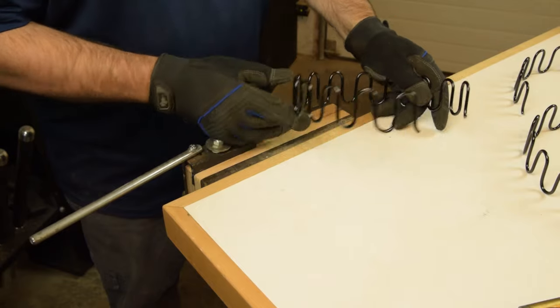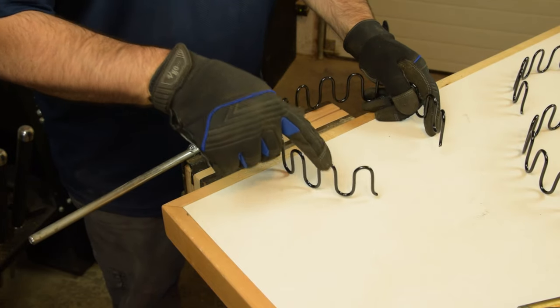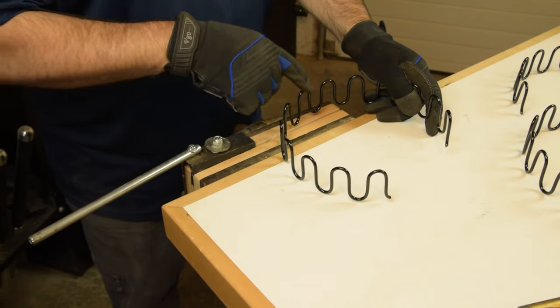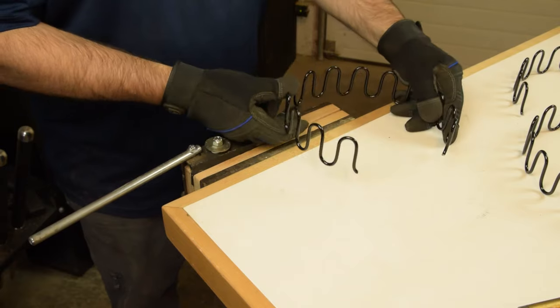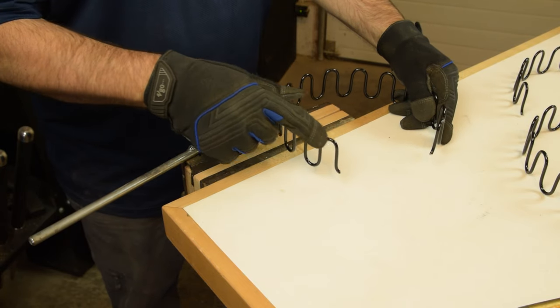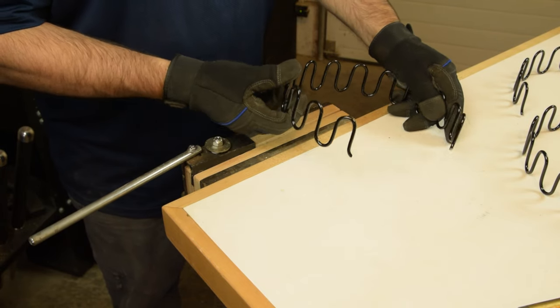These are zigzag springs and you cut them according to how many lobes there are. We figured out for our particular seat frame we need 13 full lobes, so we cut those with a bolt cutter.